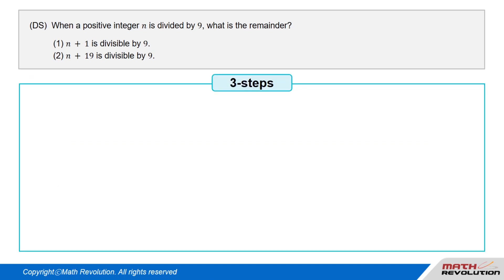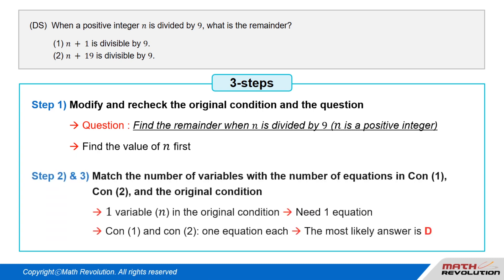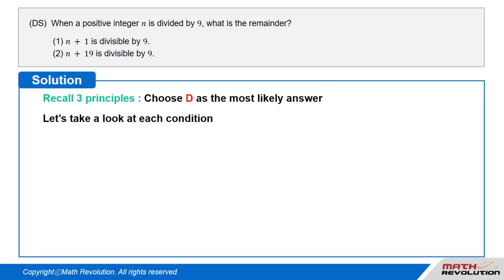Let's apply the three steps of the variable approach. In the first step, we modify and recheck the original condition and question: we are required to find the remainder when positive integer n is divided by 9, which means we need to find the value of n. From the original condition we have one variable, n. To match the number of variables with the number of equations, we need one equation. Since conditions 1 and 2 will each provide one equation, D is most likely the answer.